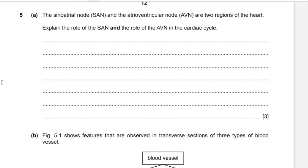Question 5, Part A. The sinoatrial node and the atrioventricular node are two regions of the heart. Explain the role of each in the cardiac cycle. The sinoatrial node sends out excitation waves acting as the pacemaker, setting the speed of contractions of the cardiac muscles. The atrioventricular node is a band of conducting fibers between the atria and ventricles that relays the impulse to the ventricles after delaying it for 0.1 seconds.